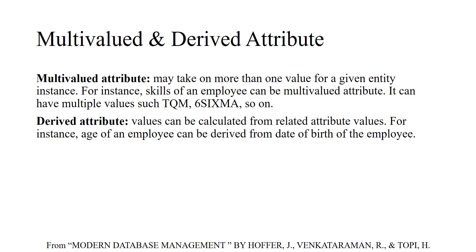We also have stored versus derived attributes. A derived attribute can be calculated from other fields in the table. For example, the age of a person can be derived from the date of birth. If you have a column recording the date of birth, you can create another column and calculate the age — so the age column becomes a derived attribute.